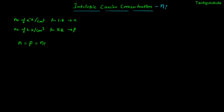Concentration means number per centimeter cube or number per volume. As derived in previous videos, the electron concentration in the conduction band is given by Nc times e to the power of minus (EC minus EF) over KT, where K is the Boltzmann constant, EC is the bottom edge of the conduction band, EF is the Fermi energy level, and Nc is the effective density of states in the conduction band. The hole concentration in the valence band is given by Nv times e to the power of minus (EF minus EV) over KT, where EV is the top edge of the valence band.